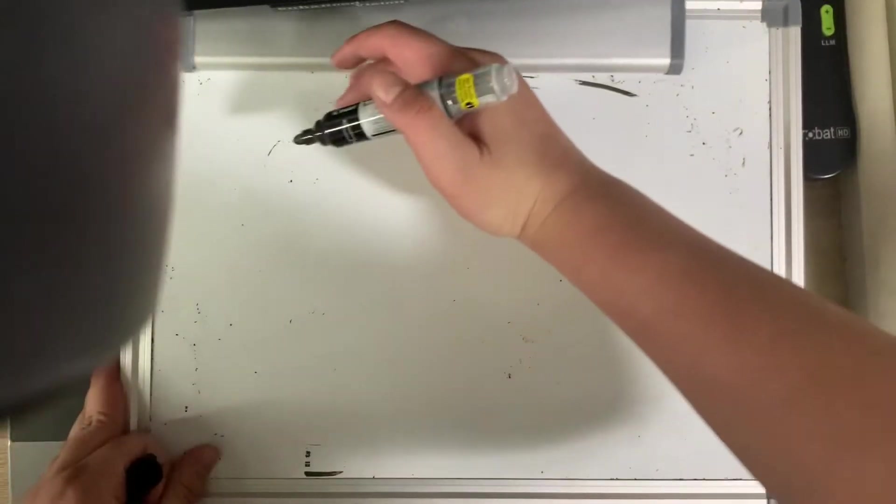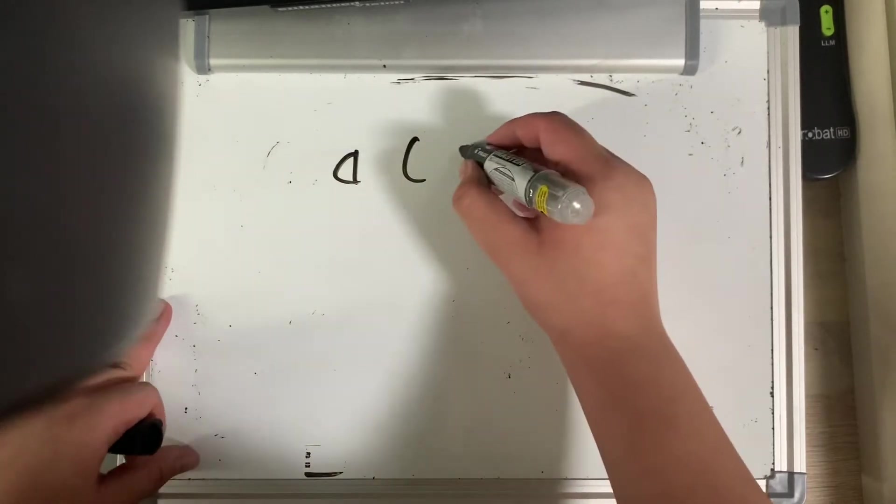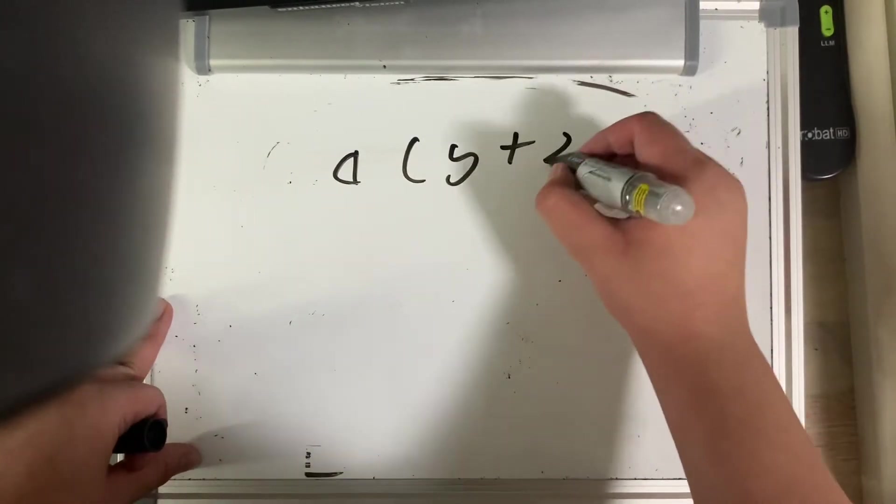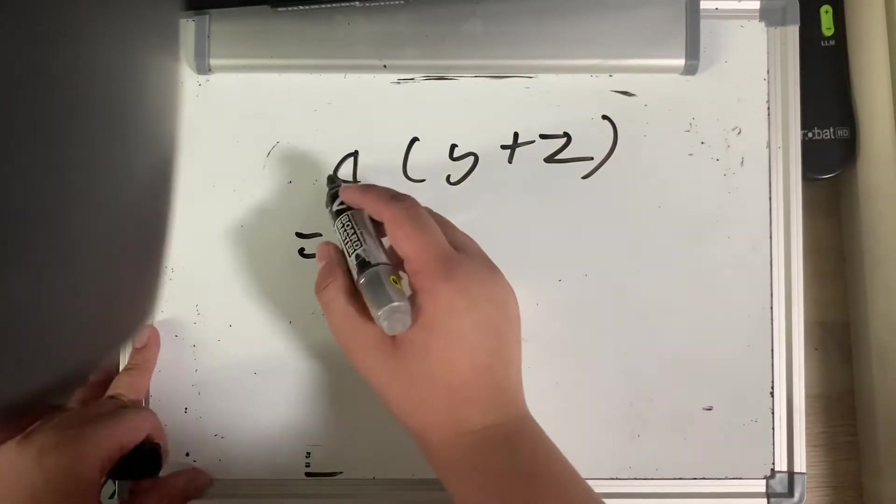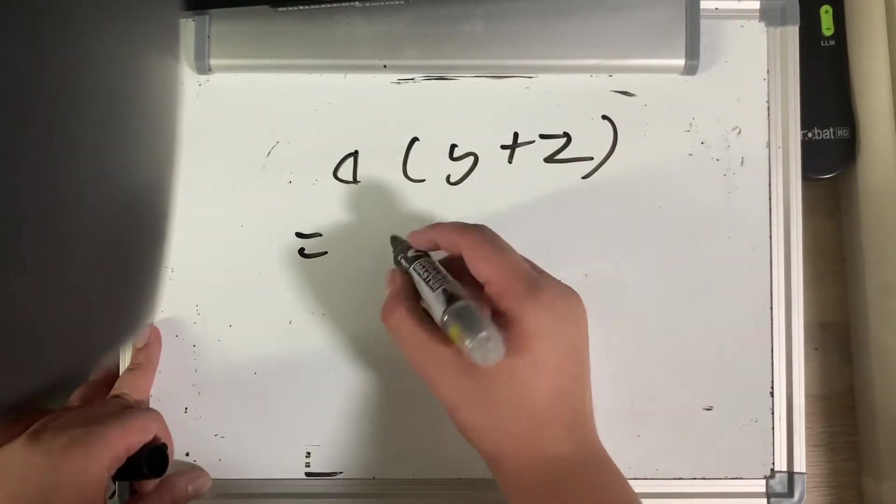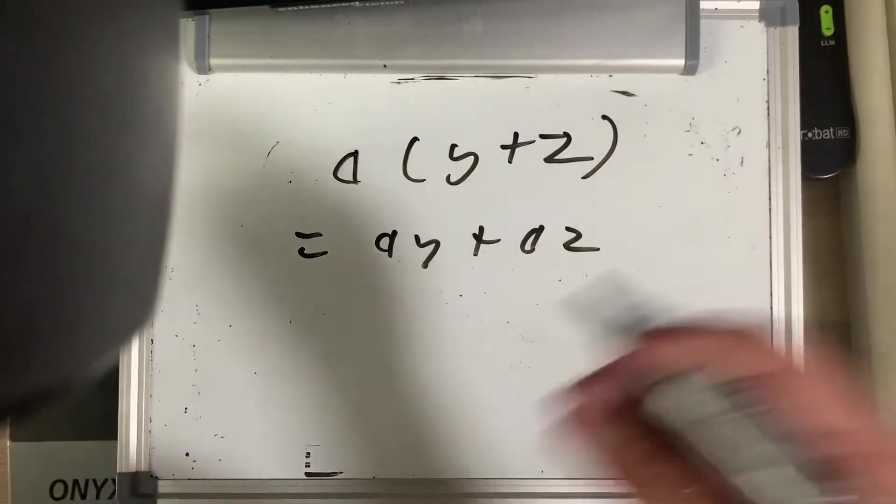We already know from the distributive property, if you watched my previous video on algebra, you would know that if I were to be multiplying a with y plus z, I could distribute it very easily by multiplying a to both terms, that's ay plus az. If you'd like to know the proof behind this, you could go watch that video.